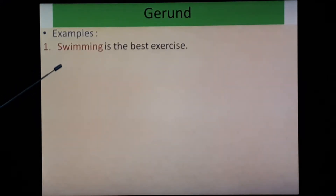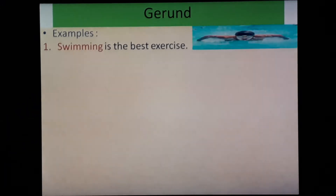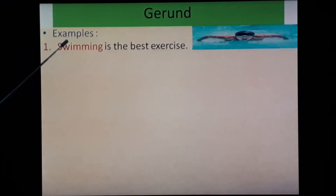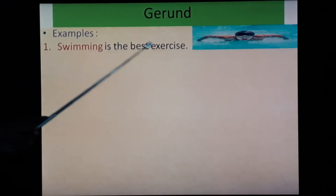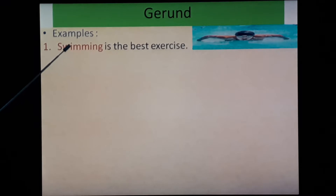Let's see examples. First, 'Swimming is the best exercise.' Here, 'swimming' — swim plus -ing — works as a noun in the sentence. So 'swimming' here is a gerund. Second, 'Reading is a good habit.' 'Read' is the verb in V1 form, plus -ing becomes 'reading.' It works as a noun in the sentence — that is called gerund.